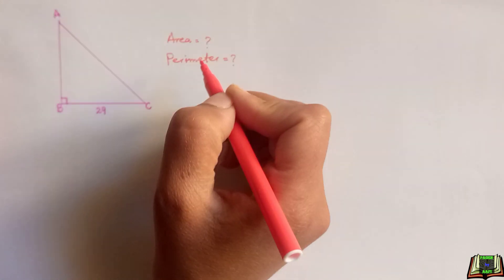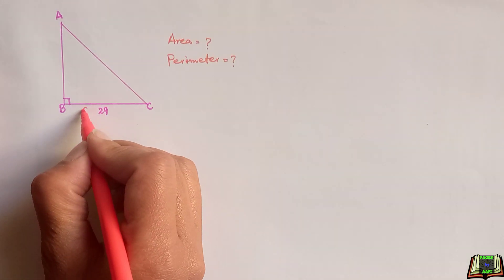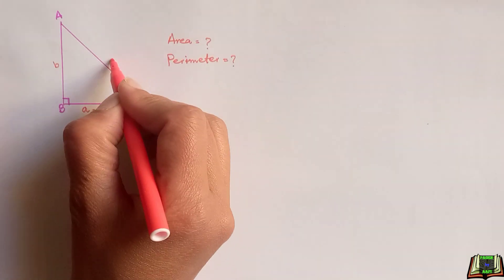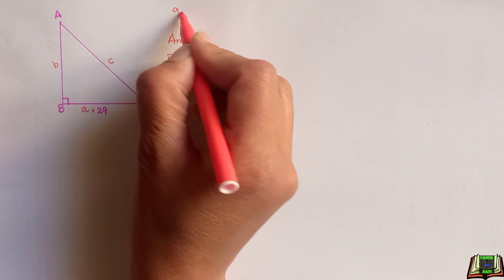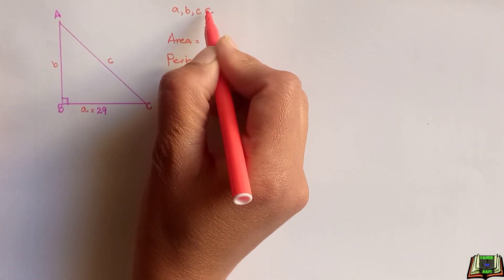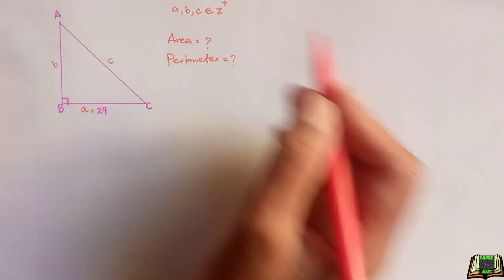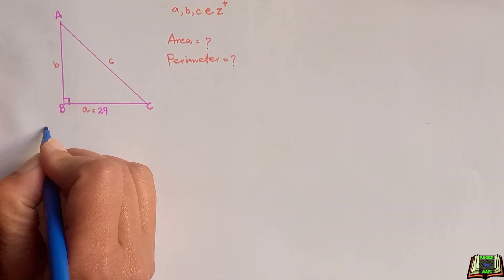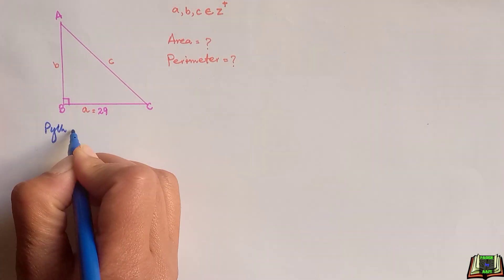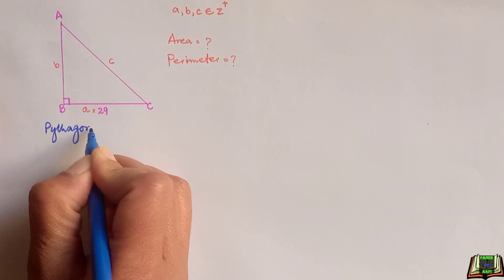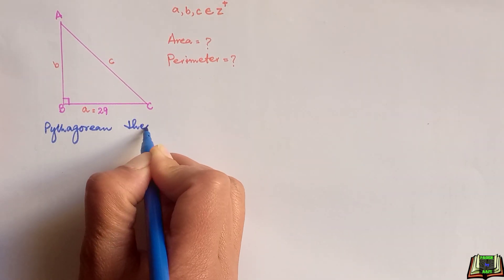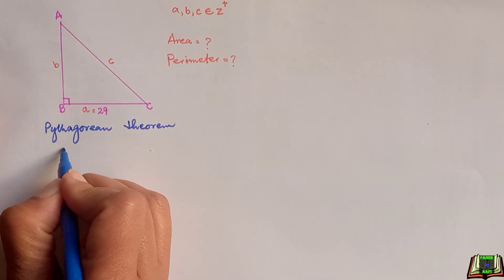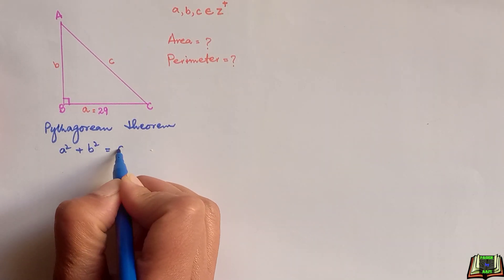We can see that one side of this triangle is given. Let's name this side as A, and we have to find out the other two sides — let's name them as side B and side C — making sure that A, B, C belong to positive integers. To find the area and perimeter we need to find the other two sides, so we are going to use the Pythagorean theorem, which states that base squared plus perpendicular squared is equal to hypotenuse squared, meaning A² + B² = C².